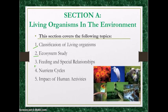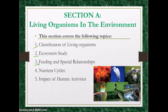Thirdly, feeding relationships. This includes food chains and webs. You need to know the symbiotic relationships such as commensalism, mutualism, and parasitism — how organisms have a close association with each other, how they benefit from each other, and in some cases how they are harmed. Fourthly, the nutrient cycles you should know about are the carbon cycle and the nitrogen cycle — how these nutrients are recycled in the ecosystem and the role of decomposers.